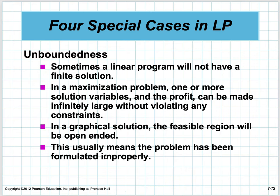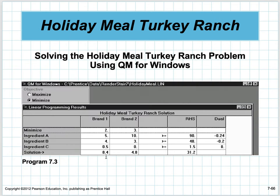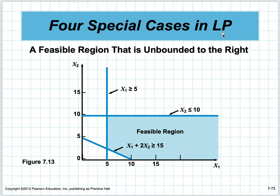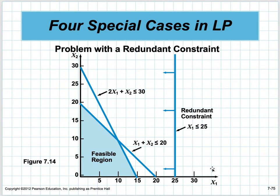Second, unboundedness: for a maximization problem, if the feasible region extends to infinity in the direction of increasing profit, you can keep making more X1 forever — this is an unbounded region, which is a problem. For a minimization problem, unboundedness in the other direction doesn't matter. Third, redundancy: when two constraints do the same thing, one is unnecessary. Eliminating redundant constraints reduces computation time.